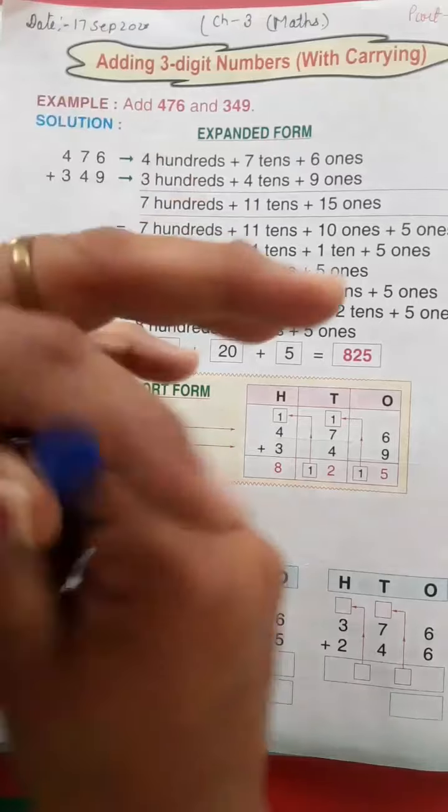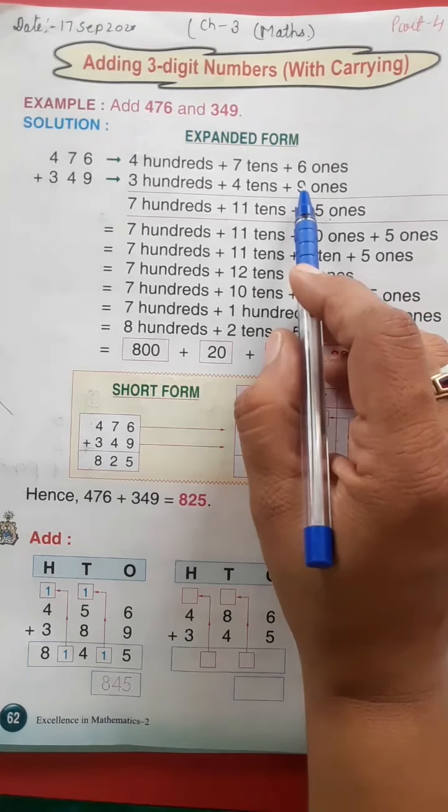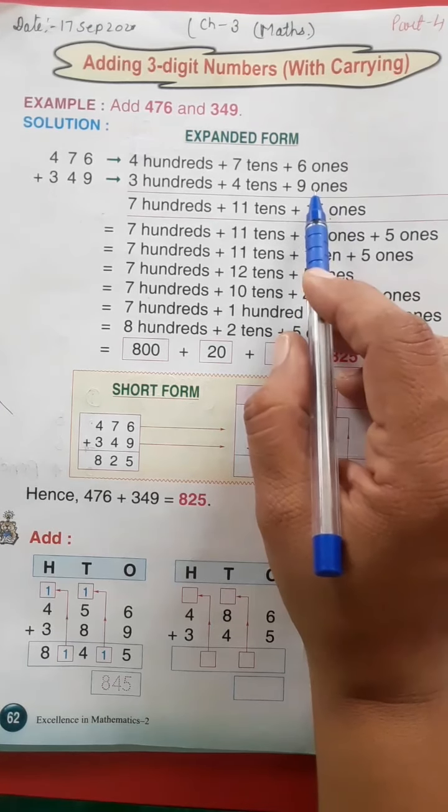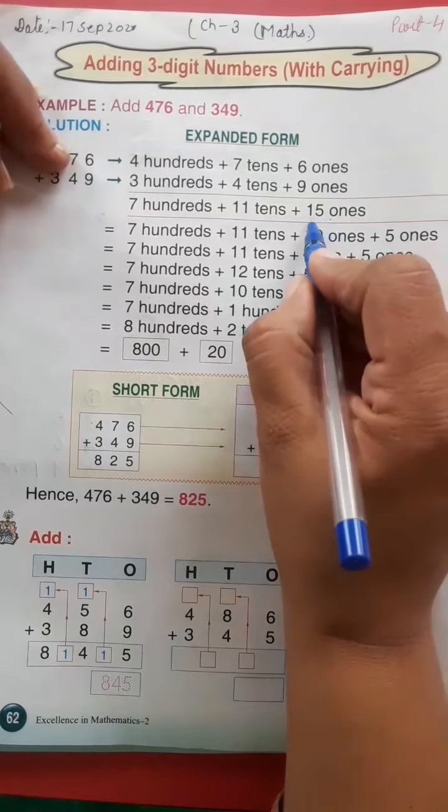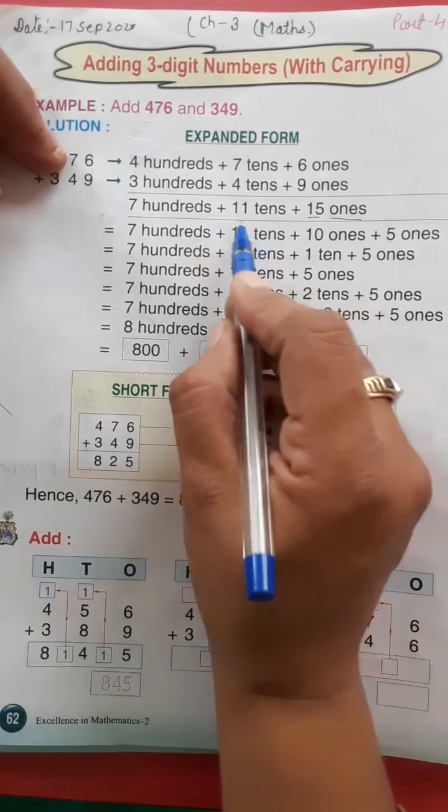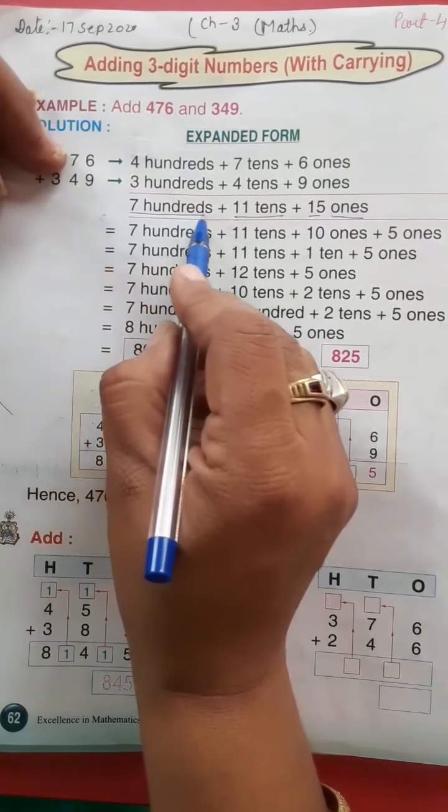To kitna aata hai hamara? Fifteen ones. Six ke baad seven, eight, nine, ten, eleven, twelve, thirteen, fourteen, and fifteen. Seven and four ko karte hai to eleven tens. Four and three ko karte hai to seven.